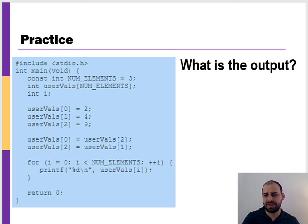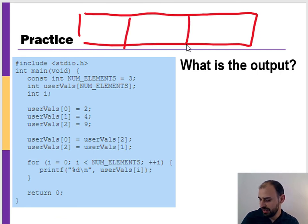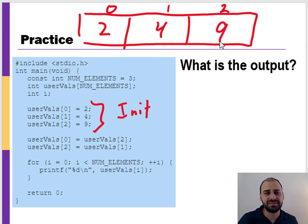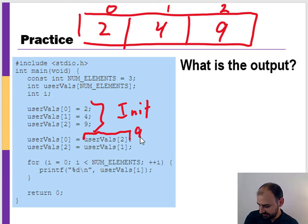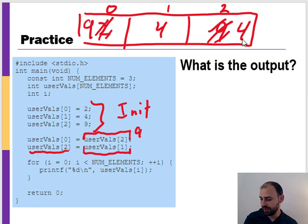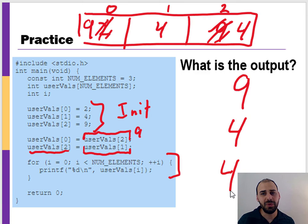Let's do another one. We declare an array called 'user_vowels' with three elements, same as before — index zero, one, and two — and initialize it to 2, 4, and 9. Then we read location two (which is 9) and write it to location zero. Then we read location one (which is 4) and write it to location two. So the final printed result is 9, 4, 4.